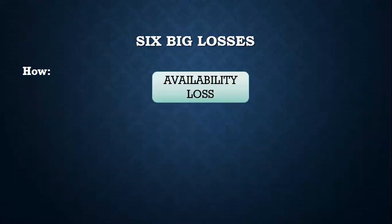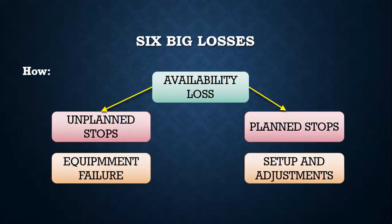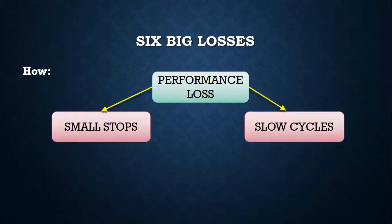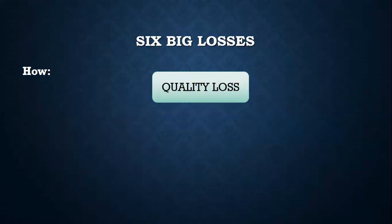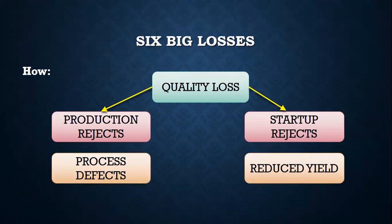The first category is availability. Two availability losses are planned stops and unplanned stops — or we can also call them equipment failure and setup and adjustment. The second category is performance loss, with two losses: small stops and slow cycles, also known as idling and minor stops, and reduced speed. The third category is quality, with two losses: production rejects and startup rejects, or process defects and reduced yield.